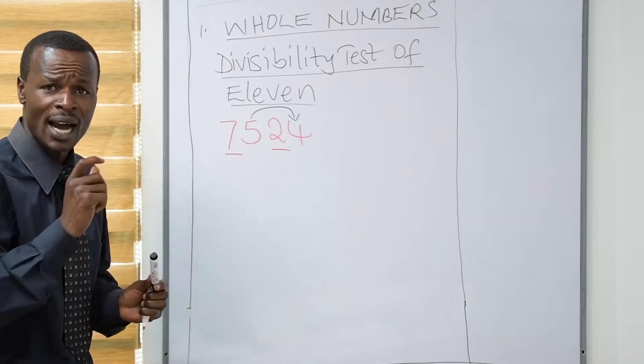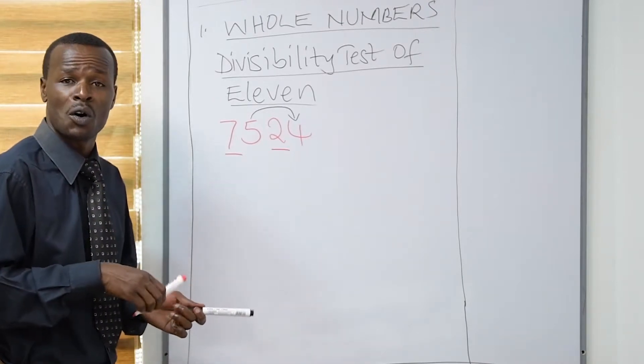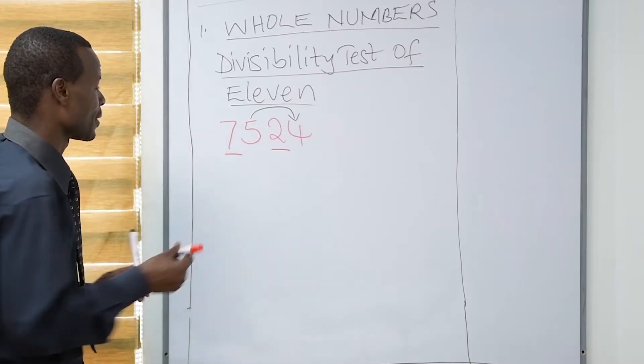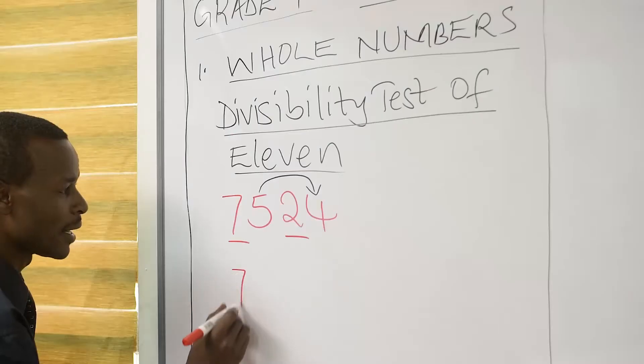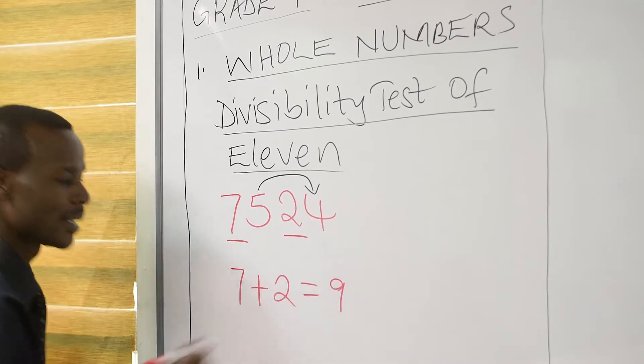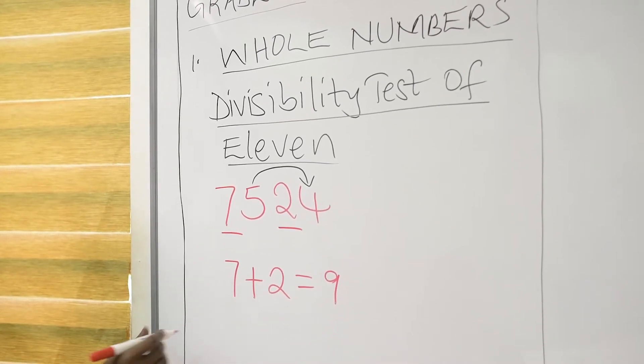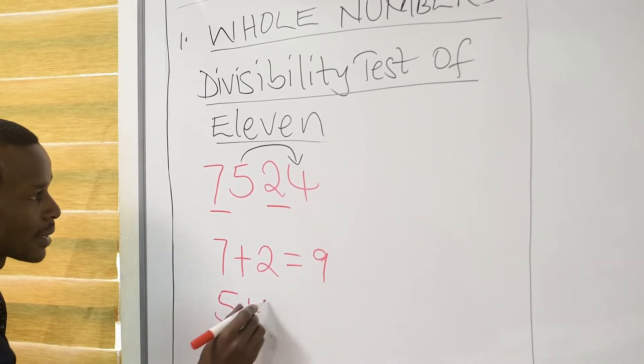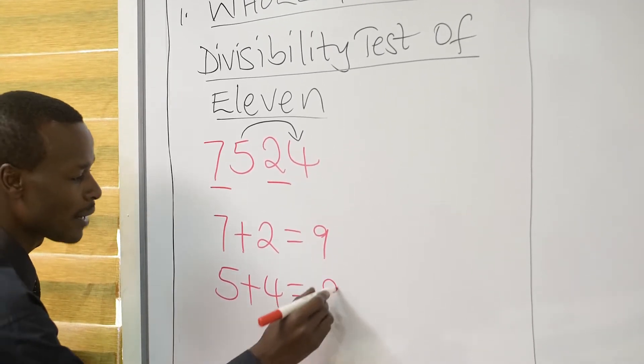Now, we are going to find the sum of these numbers and thereafter, we find the difference. So, we go 7 plus 2 will give us 9. And 5 plus 4 will also give us 9.